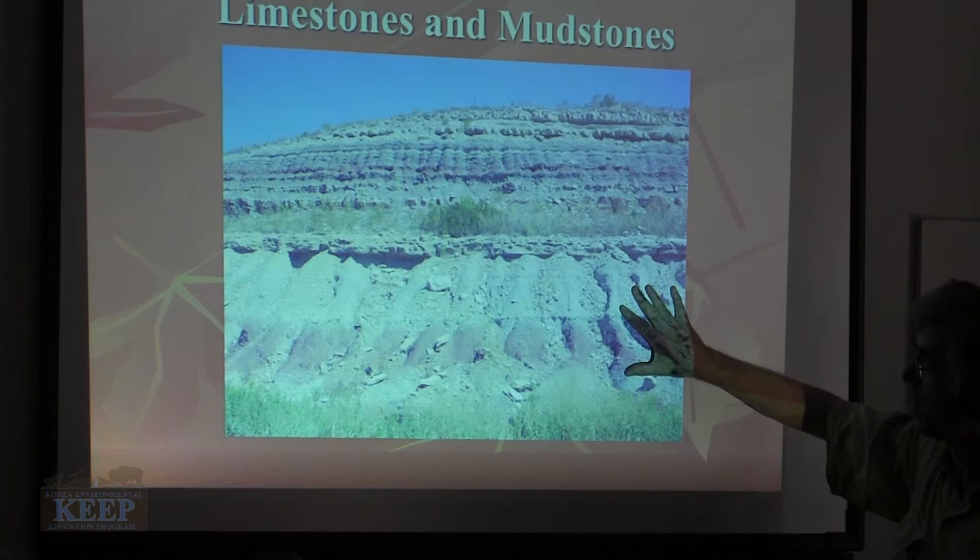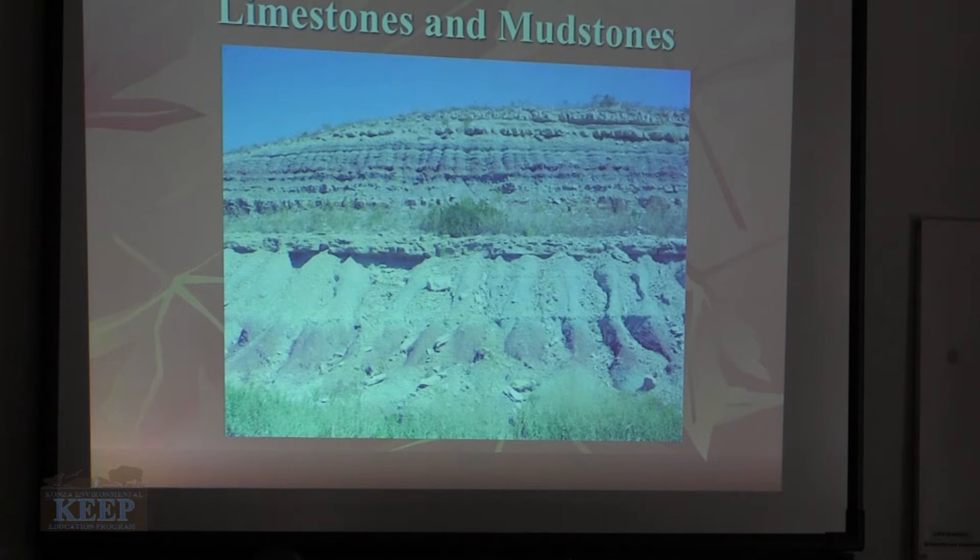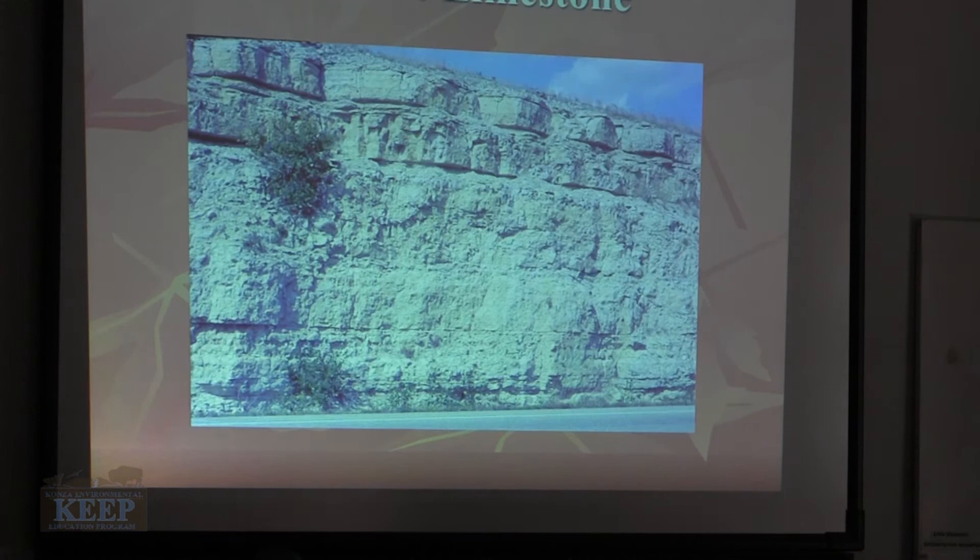So you have these softer mud rocks and siltstones, then limestones, then mud rocks, then limestones — these are what form the little ledges and platforms in the Flint Hills. That's the first basic understanding: the overall structure of the Flint Hills.